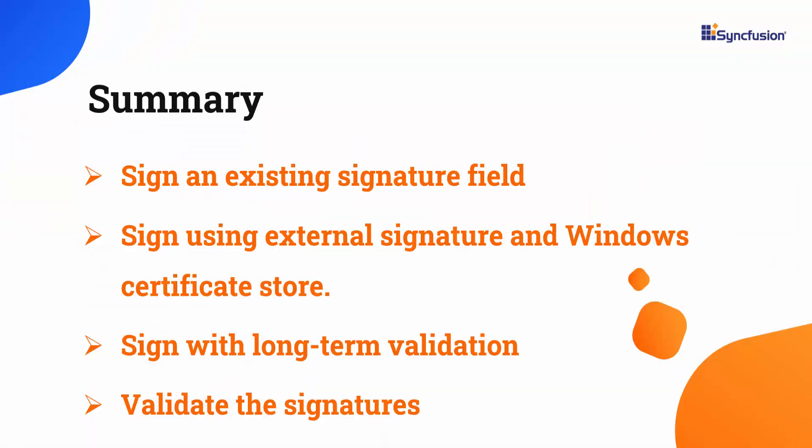Let me recap what I have shown so far. I showed you how to sign the existing signature field in the PDF document and sign using the external signature. I also explained how to sign using the Windows Certificate Store and create LTV signatures, and how to validate the signatures in the PDF document. If you would like to see the working code of this example, you can download it from the GitHub link in the description below. I've also provided a link where you can see if you qualify for a free community license to use all our Blazor products. If you found this video useful, don't forget to click the like button and subscribe to our channel. Thanks for watching.